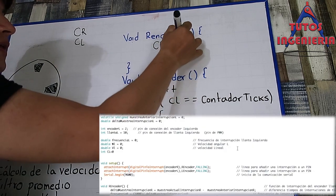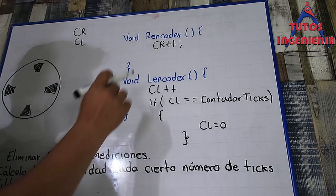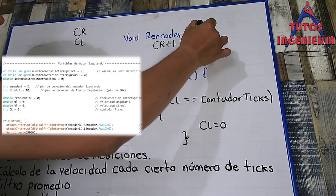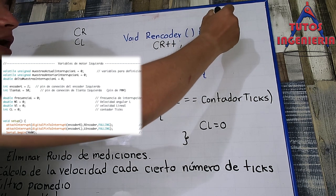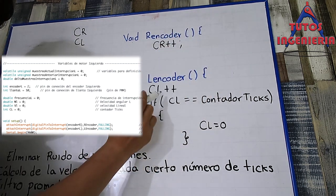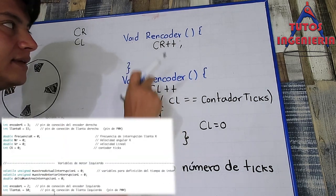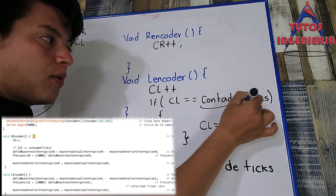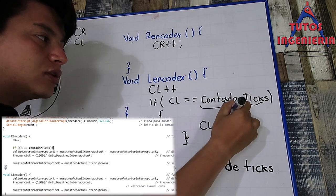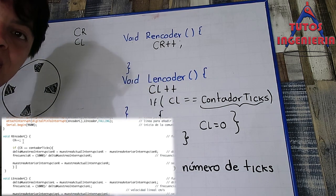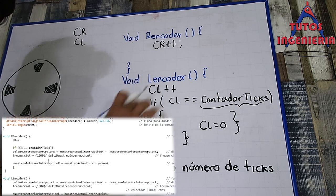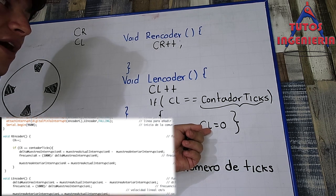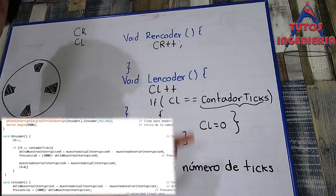We are going to generate two variables: c_sub_r and c_sub_l. Inside those functions, these variables are incremented to count the number of ticks on each encoder. Using an if instruction, we compare c_sub_r and c_sub_l with a new variable called contender_ticks — that is the number of ticks we want to achieve. When that condition is satisfied, all the calculations from the interruption function are executed.